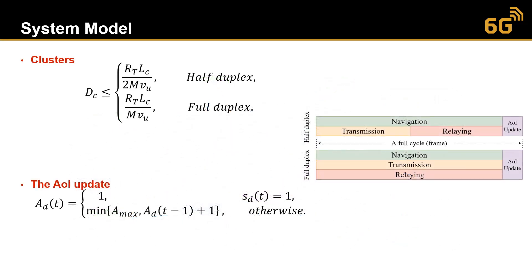We propose two models: half duplex and full duplex. In half duplex, transmission and relaying stages occur sequentially — first a transmission occurs, then the UAV relays information to the base station. In full duplex, the UAV can receive and relay information to the base station simultaneously. This slide also shows the update equation of the age of information.